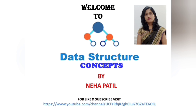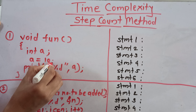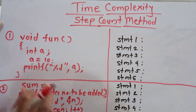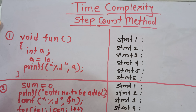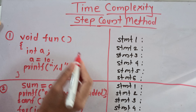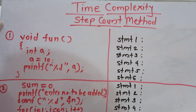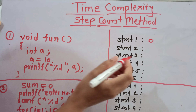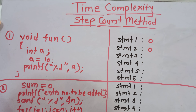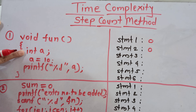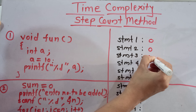This is the first algorithm. It is: void fun, integer a, a is equal to 10, and a printf statement. For each and every statement we have to calculate the step count or the frequency count. The first instruction is void fun — it is a declaration, so for declarations the step count is always 0. The opening brace also has a step count of 0. Next is integer a — again a declaration, so the step count is 0.